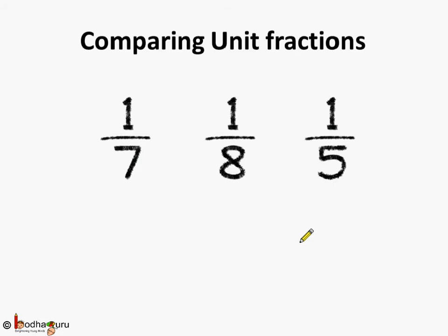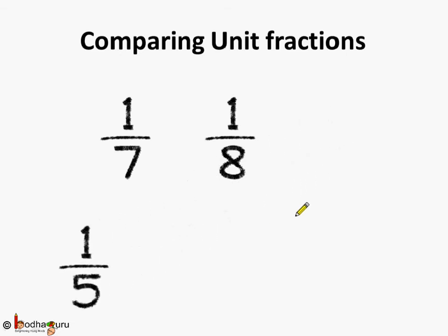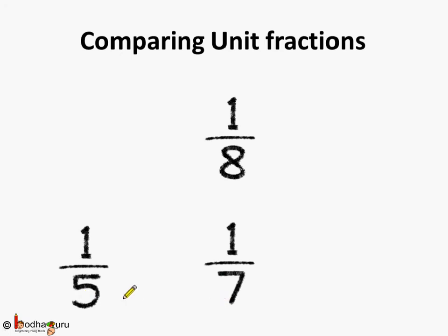Now, how do we compare unit fractions? Do we need to make the denominator the same? No. We already know that 1 by 2 is greater than 1 by 4th. As the value of the denominator increases, the value of the fraction decreases. So, we can say 1 by 5th is greater than 1 by 7th, because 5 is less than 7.